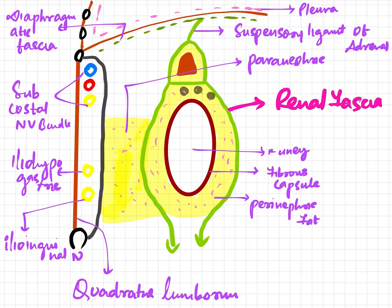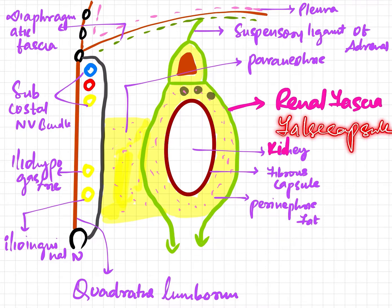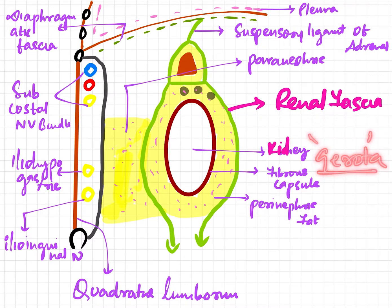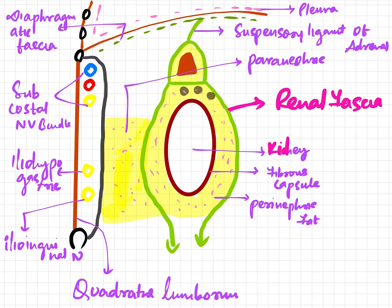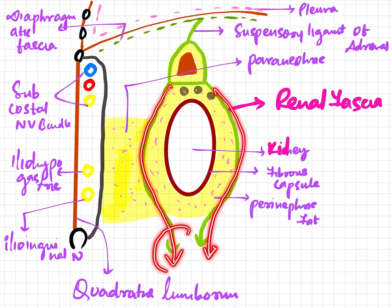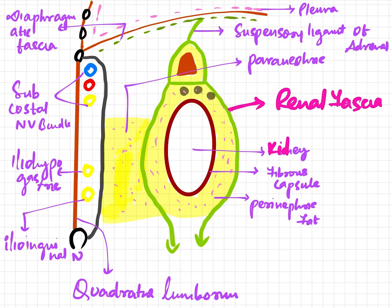Now coming to the renal fascia, which is also called the false capsule or the fascia of Gerota. Its main function is that it anchors the kidney to the posterior abdominal wall. It is also a dense irregular connective tissue, having two layers — an anterior layer and a posterior layer. The anterior layer is also called the fascia of Toldt, and the posterior layer is called the fascia of Zuckerkandl.